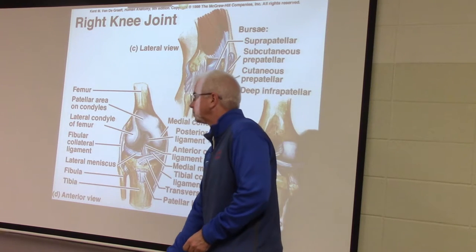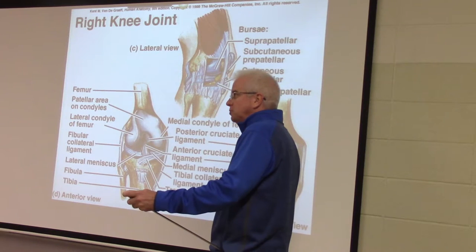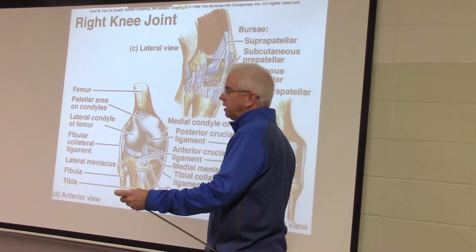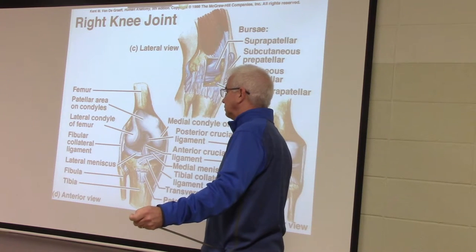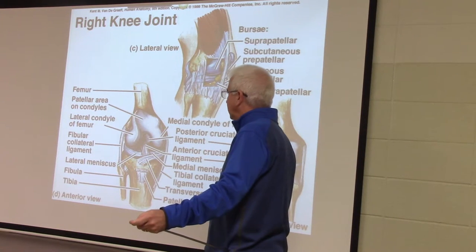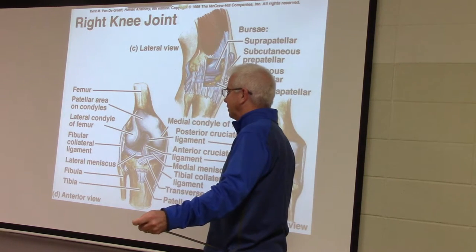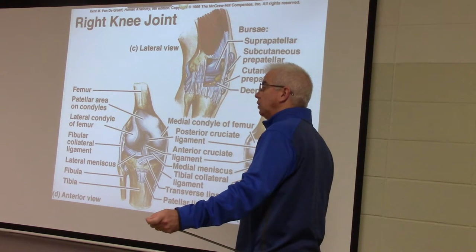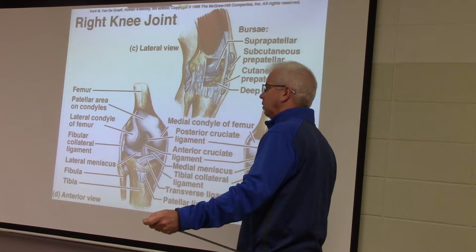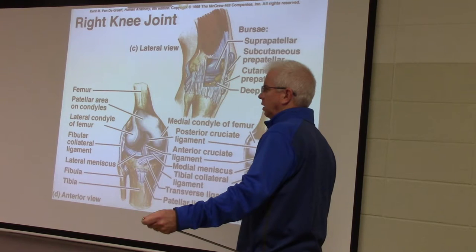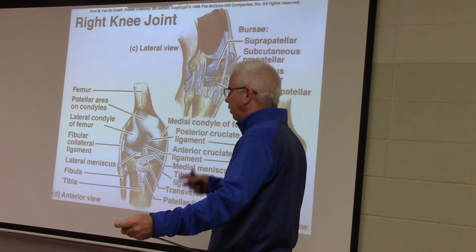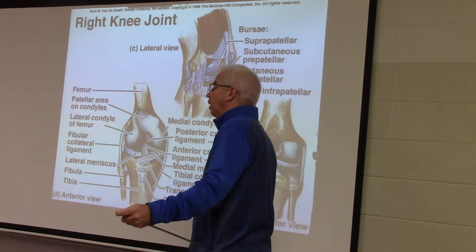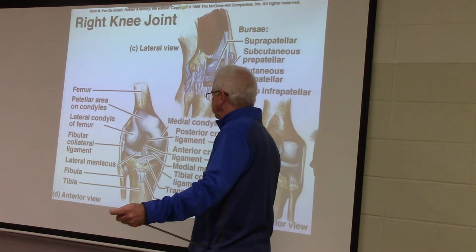Student question: when they do that surgery, what do they do with the original ACL? Instructor: if it's torn and damaged, the immune system is already chewing it up — they likely remove whatever's left. Student: I had surgery where they went in and tried to trim the dead meniscus — it looked like crab meat — and kept what was still alive, but the remaining tissue fell apart and I had to go in again to have it all removed. Instructor: that makes sense — they tried to save it the first time, and when it failed, they had to go back in.